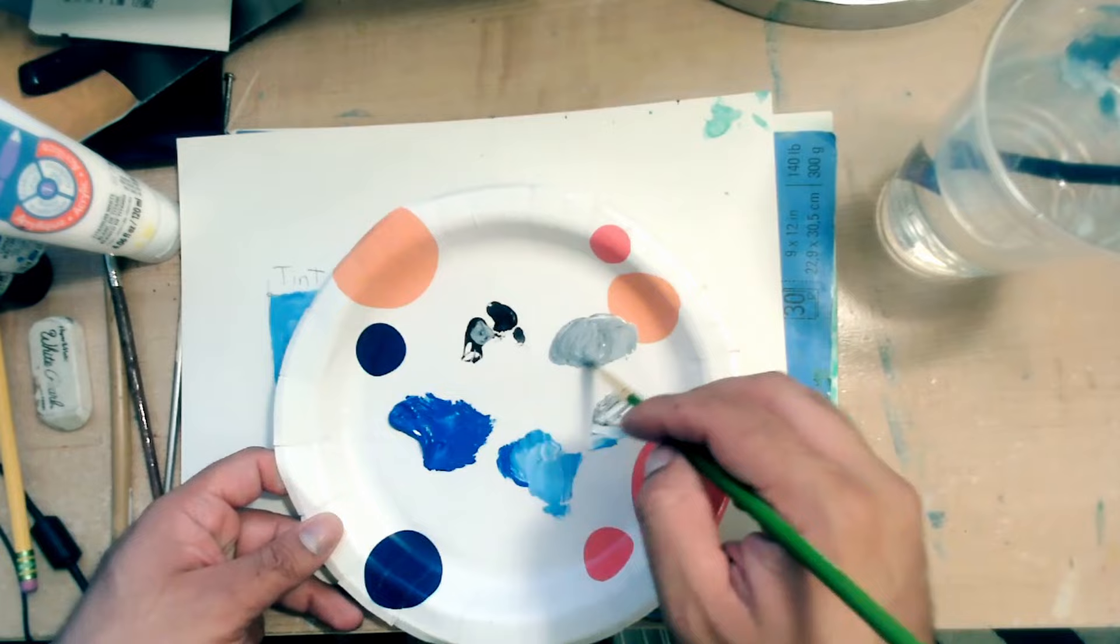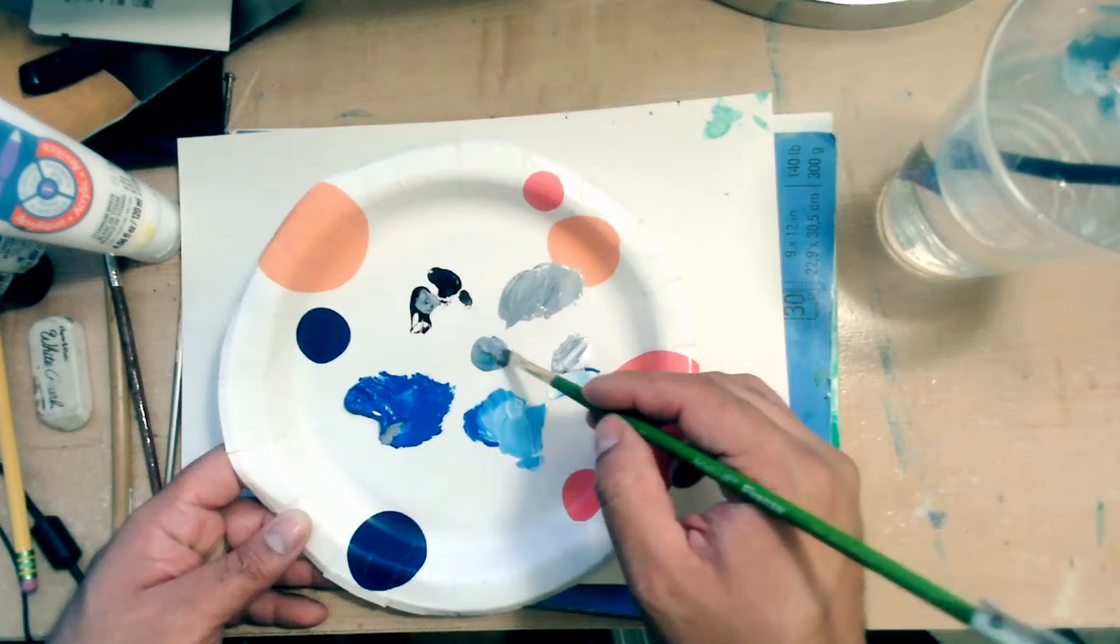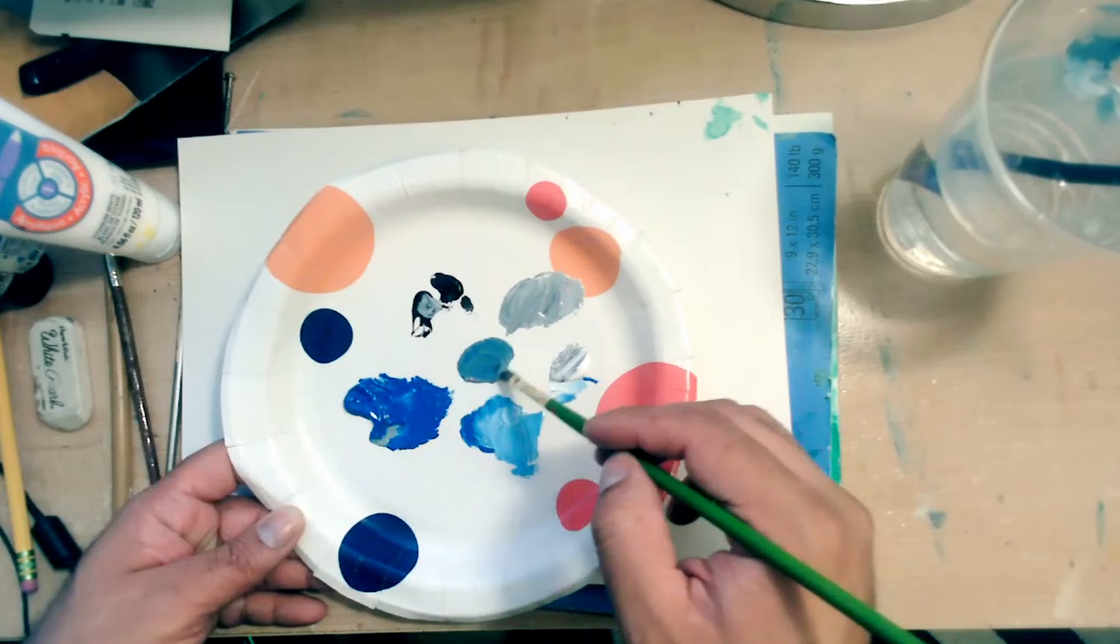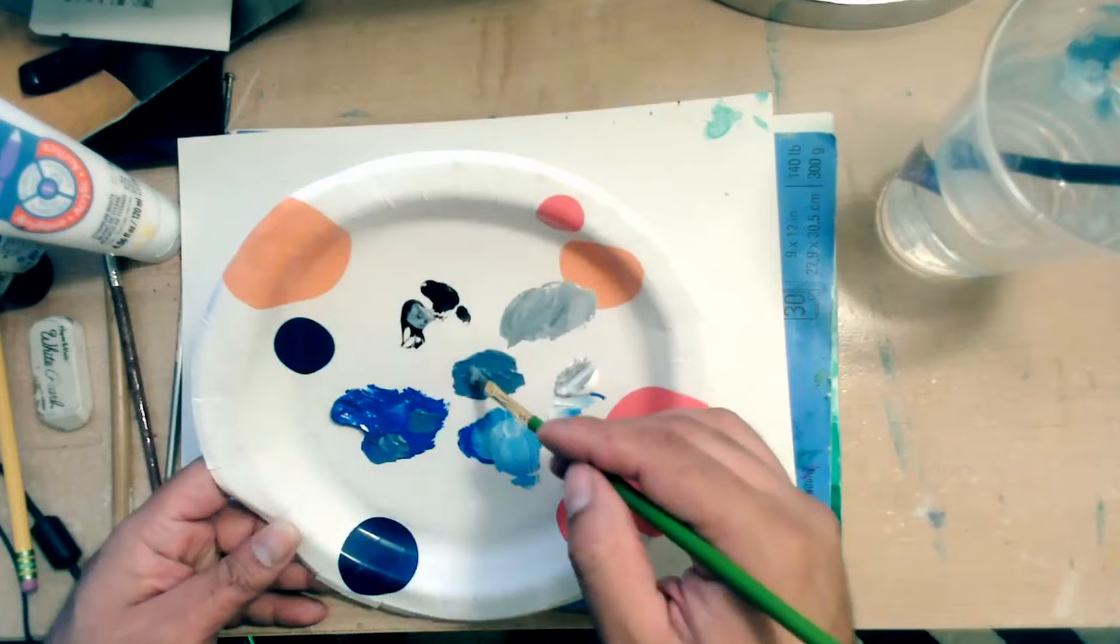So now I'm going to take this and some blue and mix it here. It still looks a little grayish, so maybe I can add a little bit more blue. You want it to look more blue than gray. If it looks too grayish, you need to add more blue or whatever color that you choose. So it looks okay. I think I'm ready. There we go.